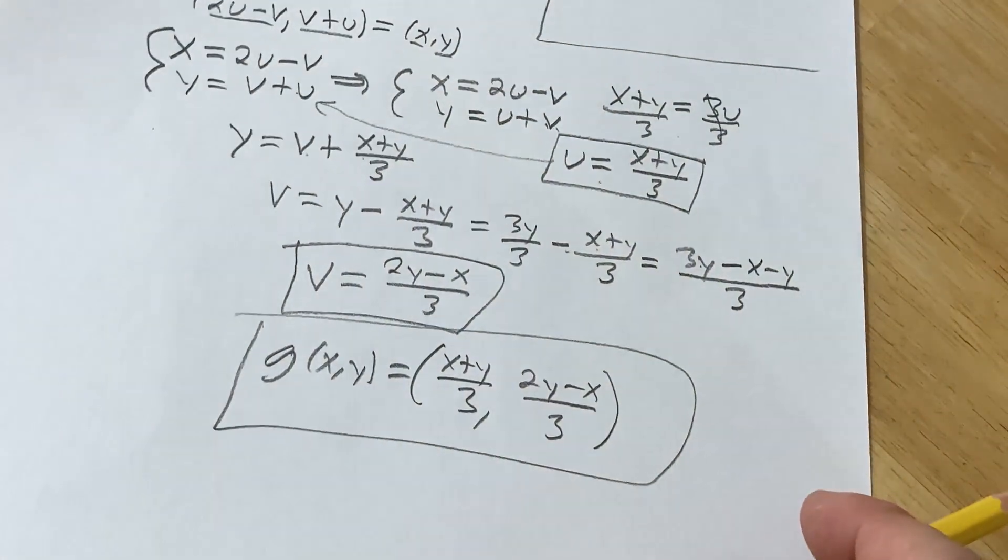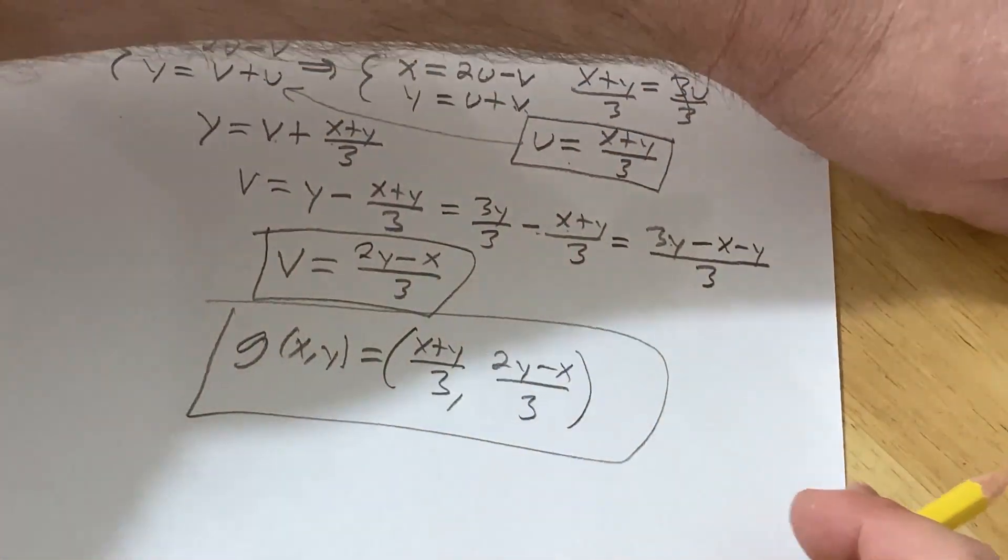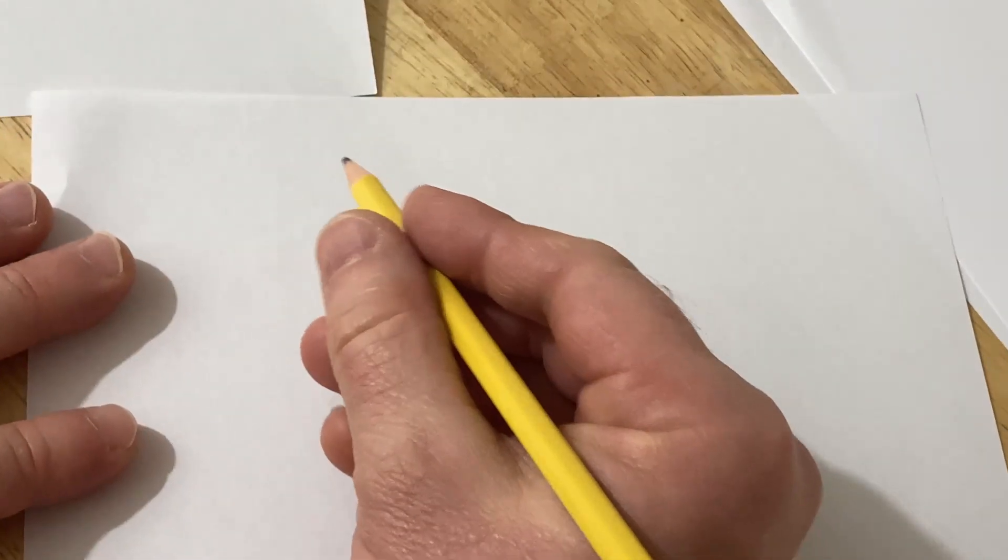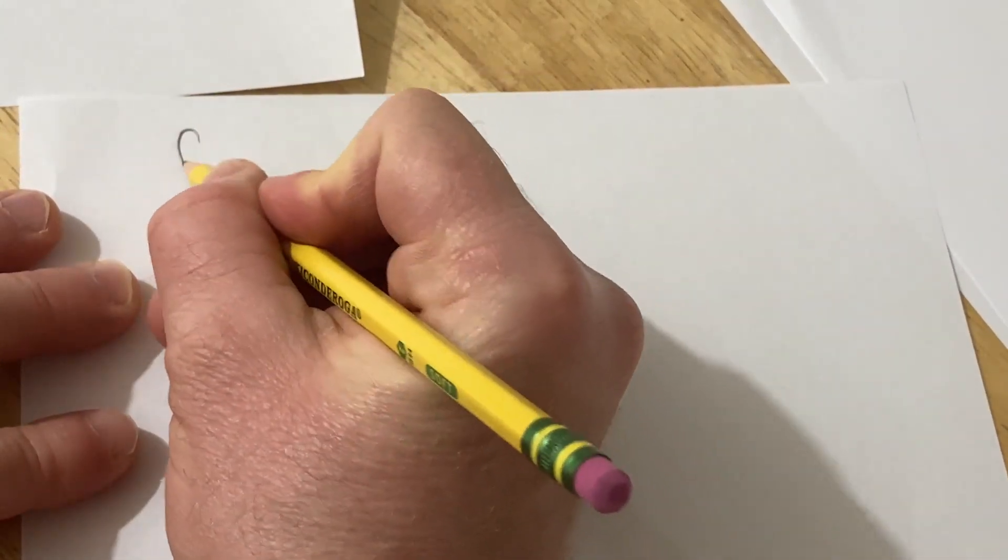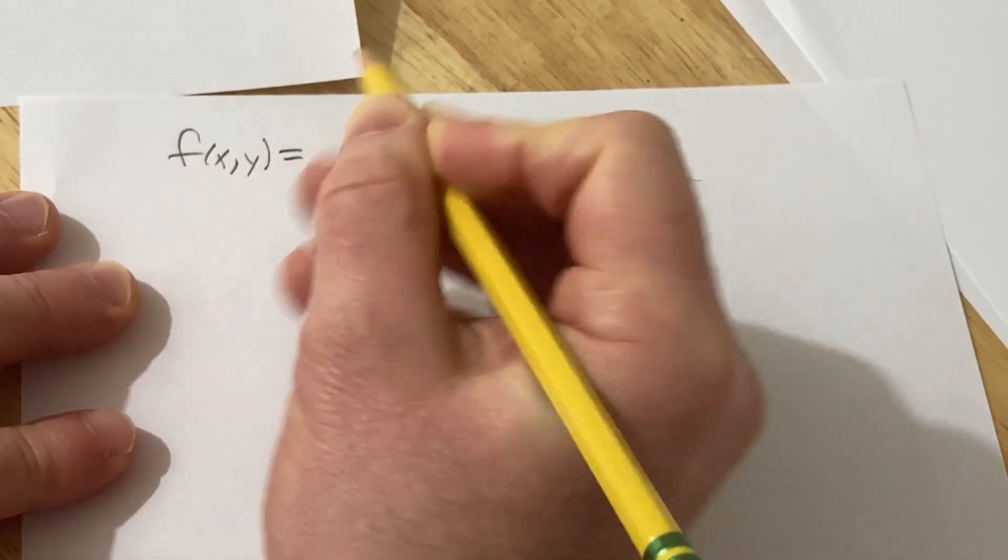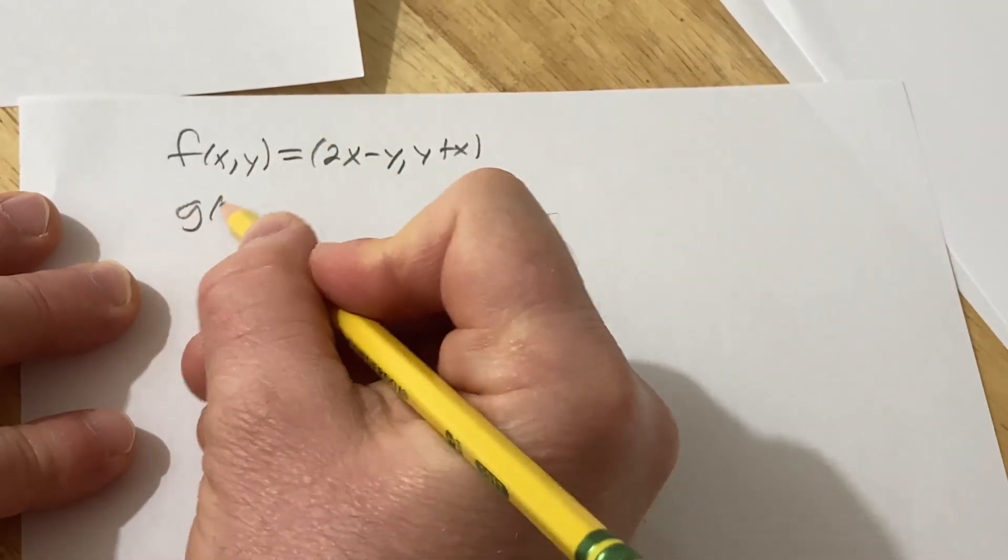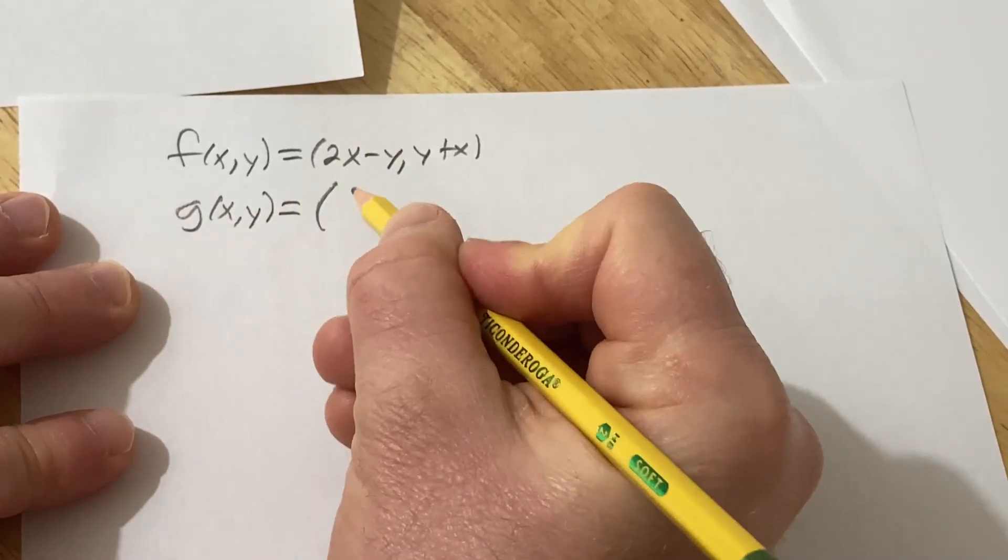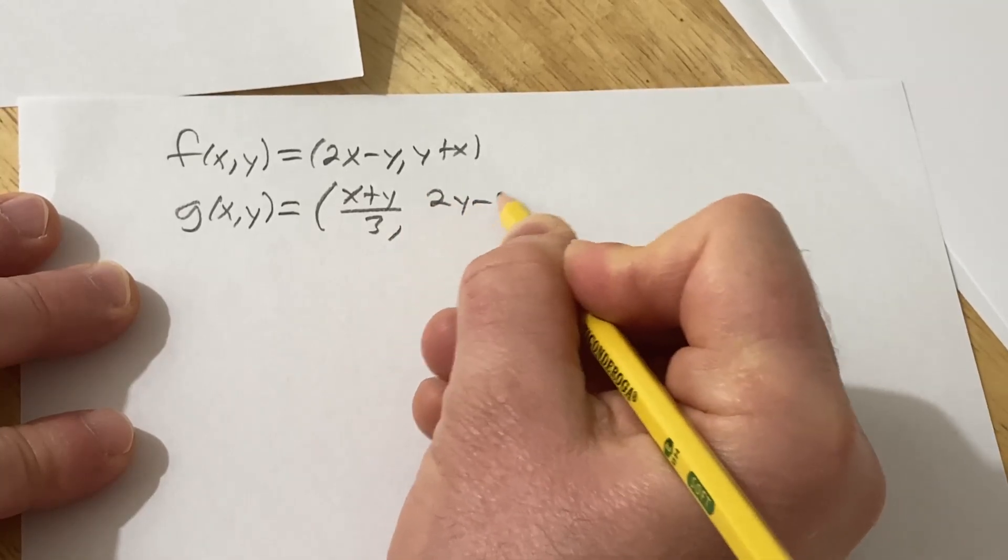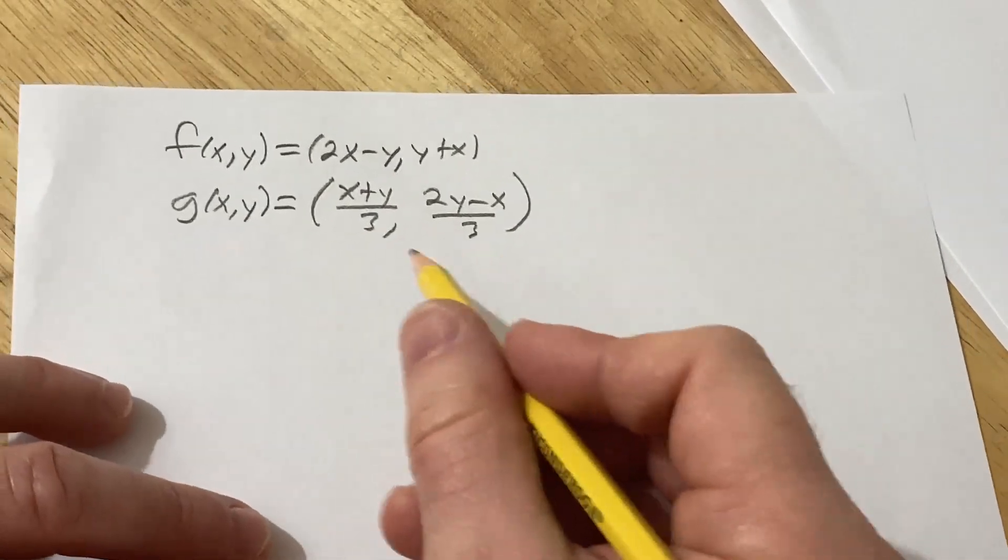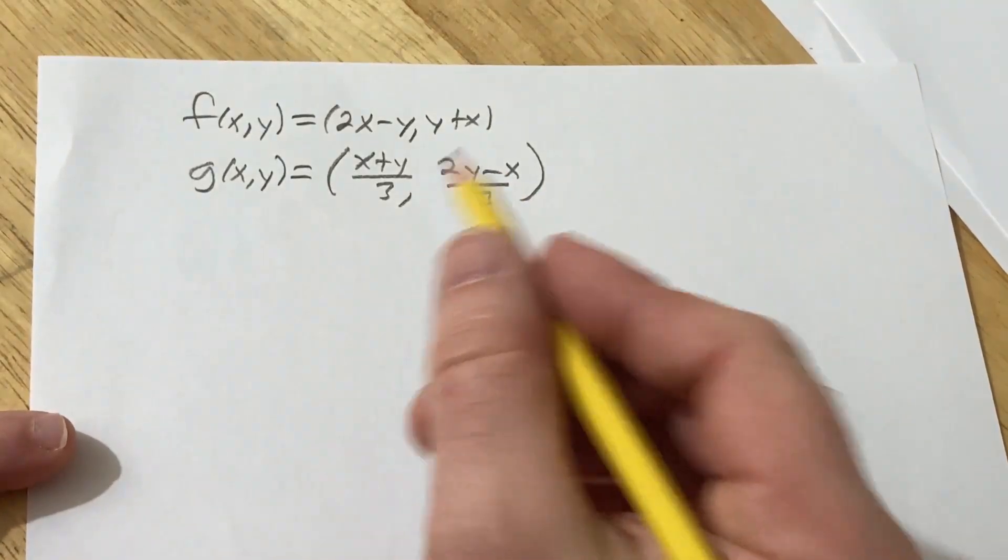So now comes the tedious part where we're actually going to check. I'm going to need another piece of paper for this because it's just going to get messy now. Now it's going to get crazy. So I've got some more paper here. Alright, so I'm going to go ahead and write down our functions again so we have them in one place so we can proceed with the verification. So we have f of (x,y) is equal to (2x - y, y + x). And we're going to check to see that g of (x,y), which is this function we came up with, ((x + y)/3, (2y - x)/3), we're going to check that this is actually the inverse of f. So basically we just have to take the composition both ways and then show it's equal to (x,y). So let's do it.